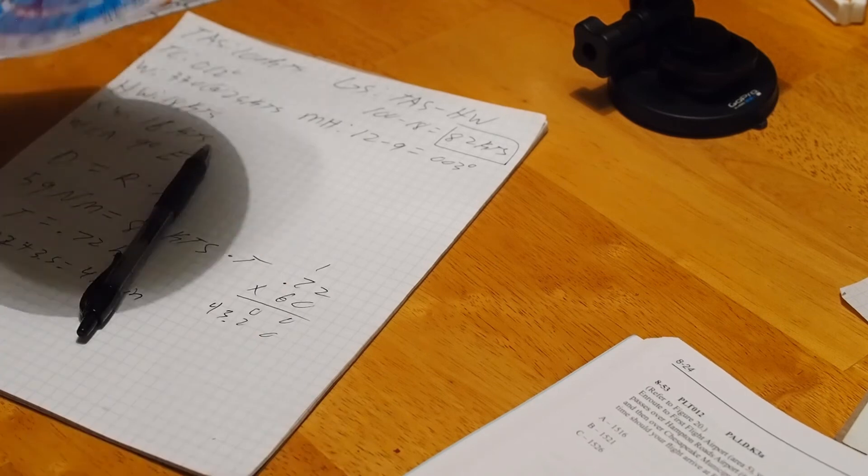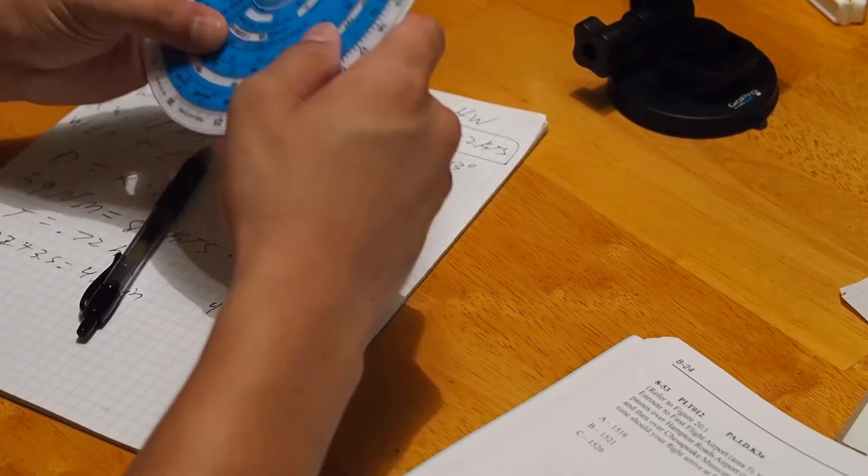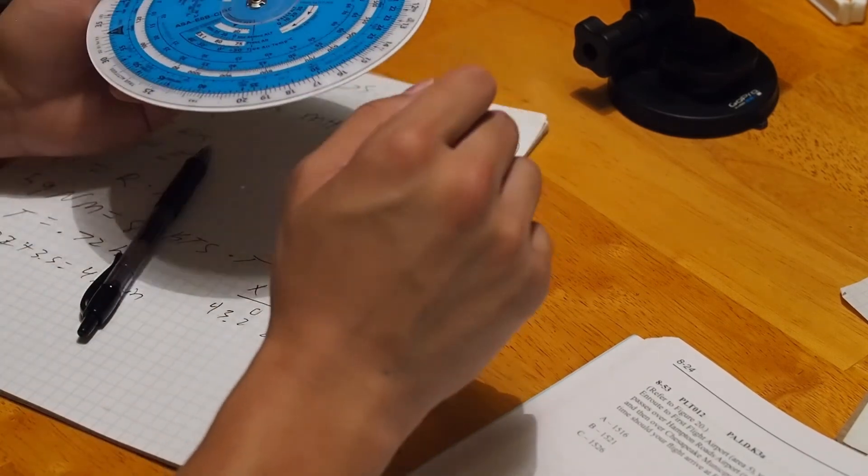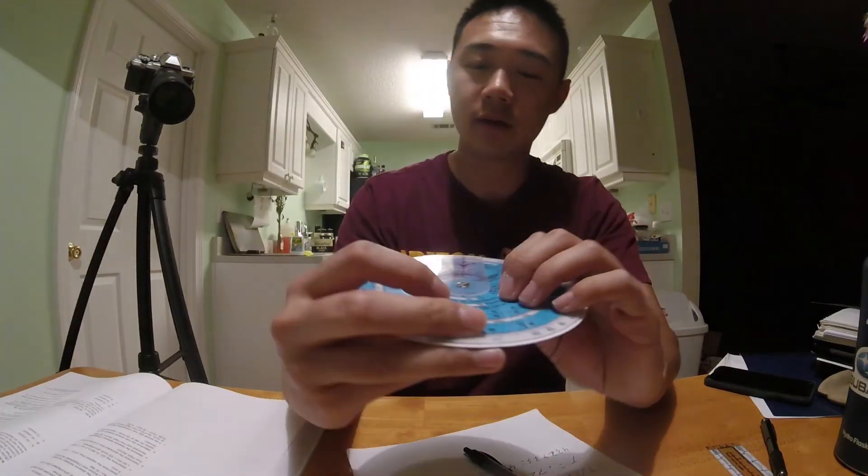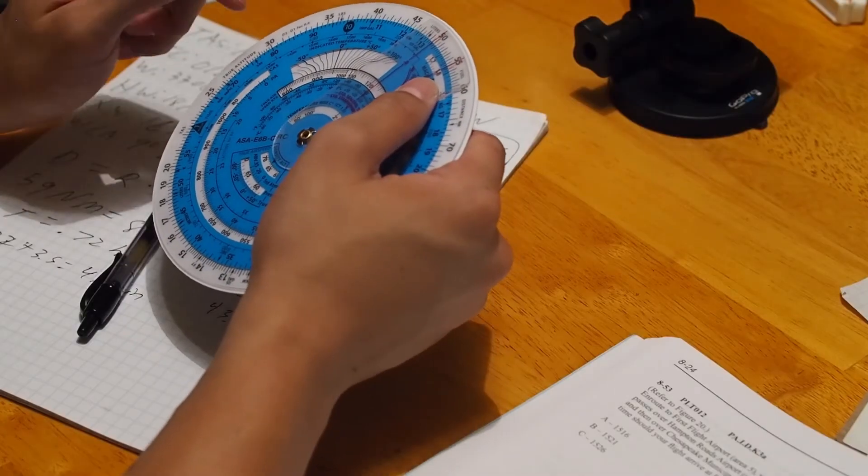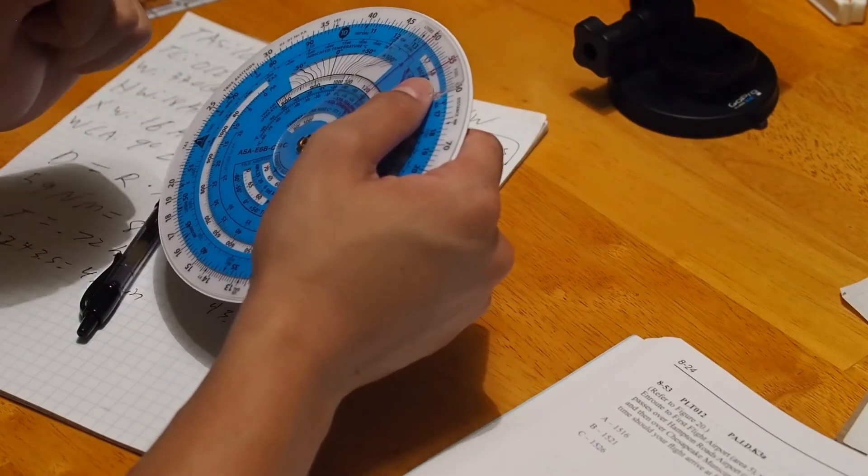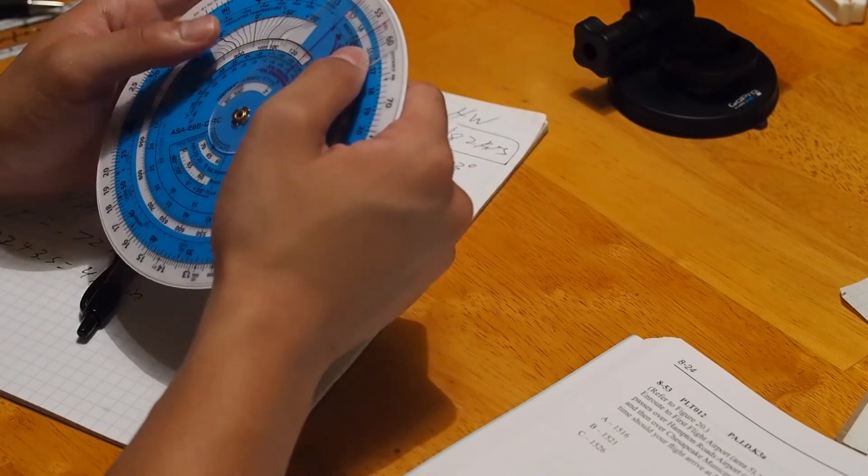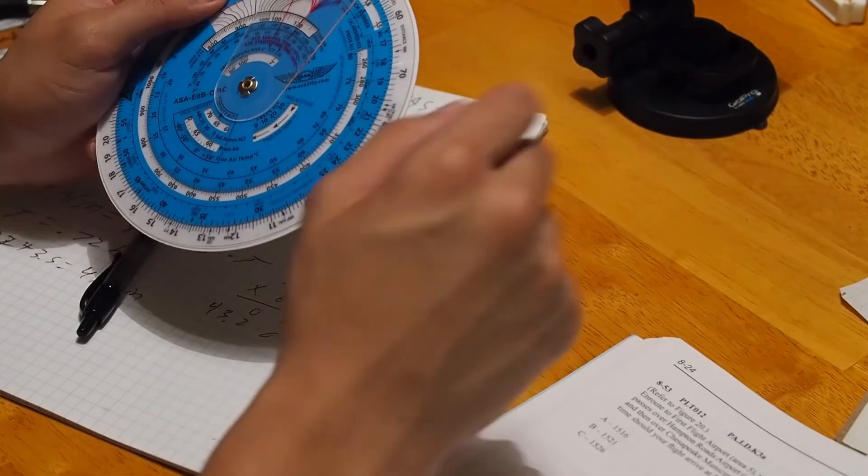Now, one more thing. To find density altitude, you're going to use this window right here. It says density altitude. So you have to have your pressure altitude and your ambient temperature in Celsius. Well, I guess you can have it in Fahrenheit, you can convert, but it's just easier.